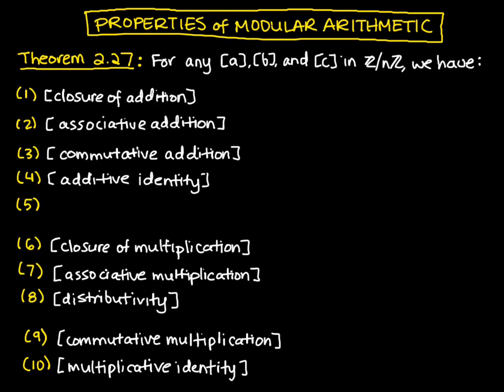Here, we just want to note some important properties of modular arithmetic. So if we have any congruence classes a, b, and c in the integers mod n, we get the following properties.